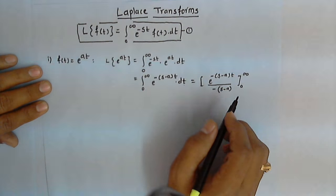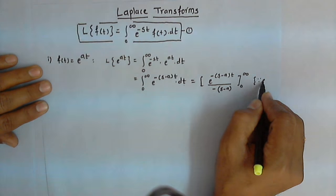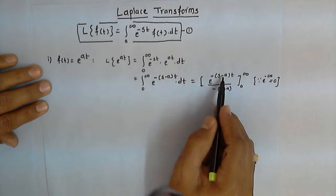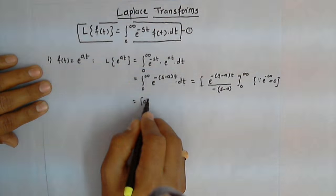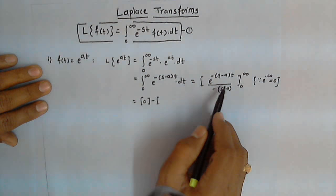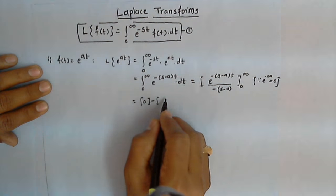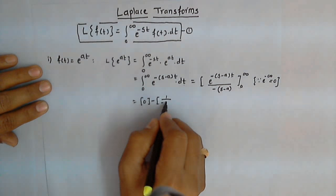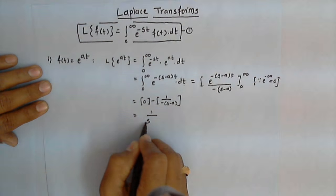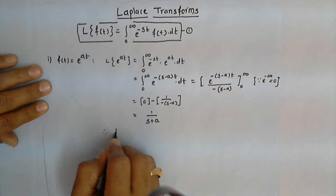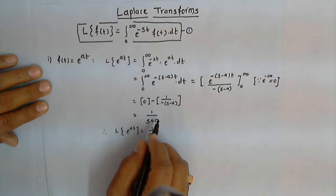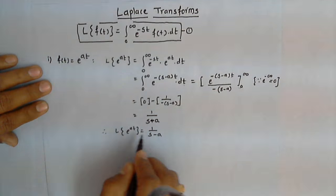Here s and a are constants with respect to t. As we know, e raised to minus infinity is 0, so the upper limit value is 0. For the lower limit, we put t equal to 0, so e raised to 0 is 1. Therefore, we get 1 upon minus of (s minus a), which gives us 1 upon (s minus a). Therefore, the Laplace transform of e raised to a t is 1 upon (s minus a).